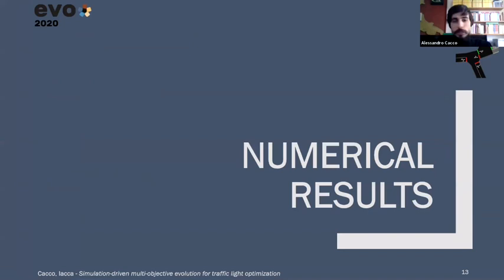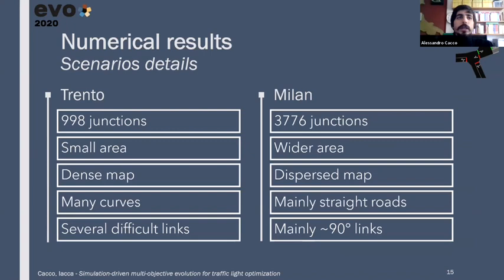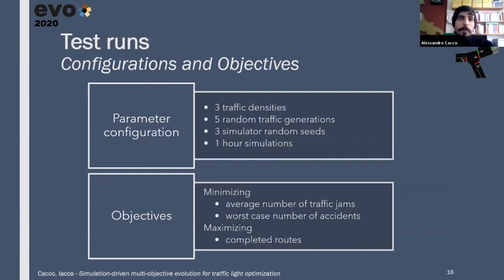Let's see some of the experimental results of the runs we performed. We consider these two maps, one of the Trento city center and one of Milan city center. These are quite different. Trento has 998 junctions. It's a smaller area, but it's more dense, and has complex curves and complex junctions. While Milan is a wider area with more junctions, it's less dense than Trento, but it has mainly perpendicular roads and links.